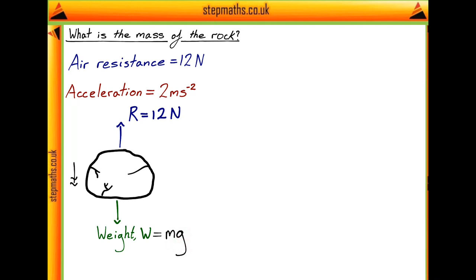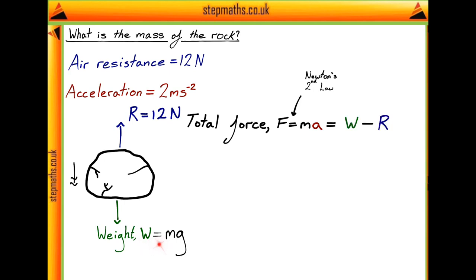Now we know that by Newton's second law, the total force on the rock is going to be equal to its mass multiplied by its acceleration in the downwards direction of 2 metres per second squared. Then by looking at our diagram we can see that this total force is going to be equal to the weight of the rock minus the force due to air resistance.